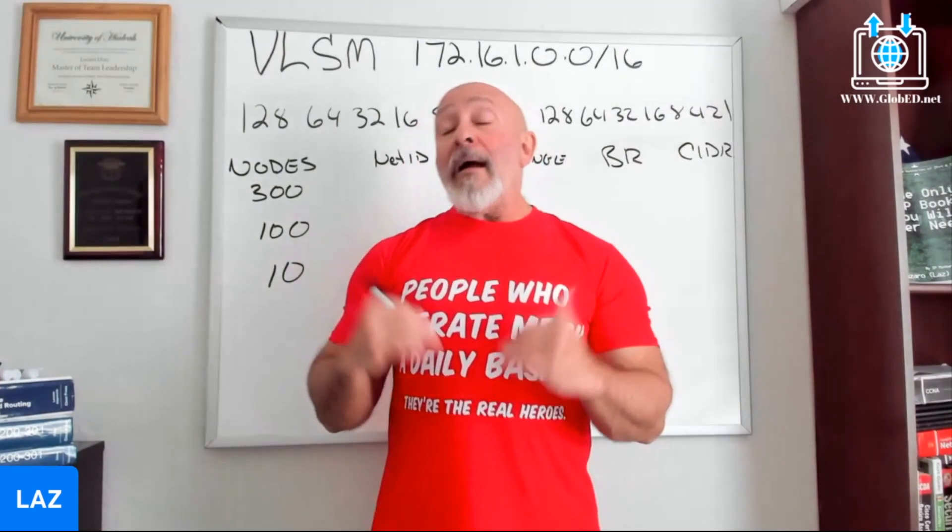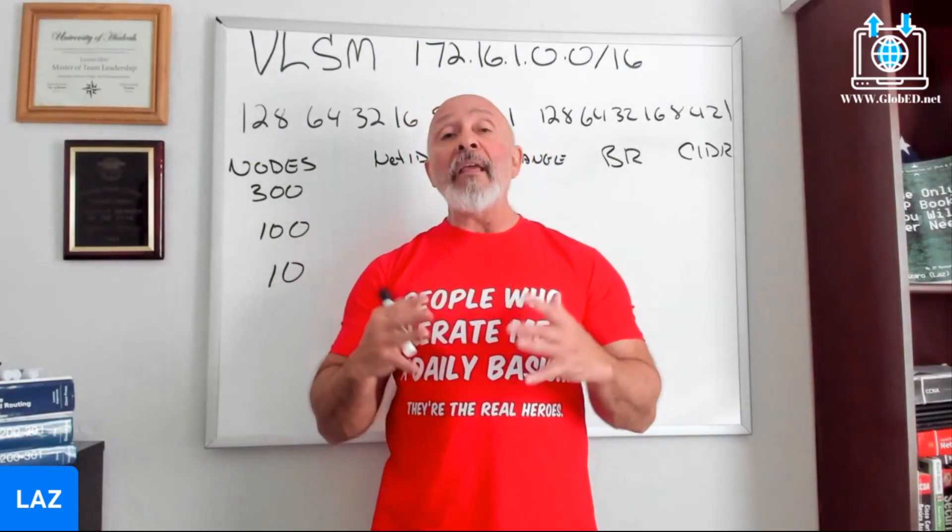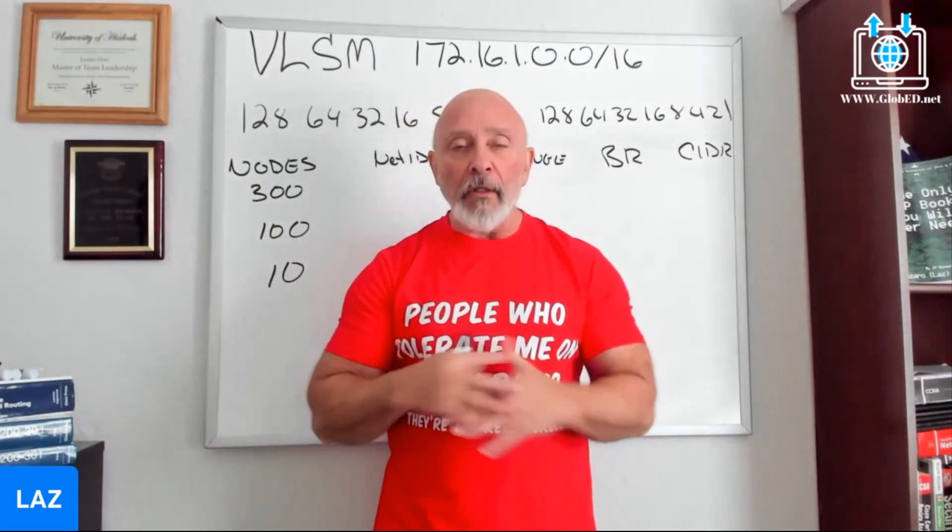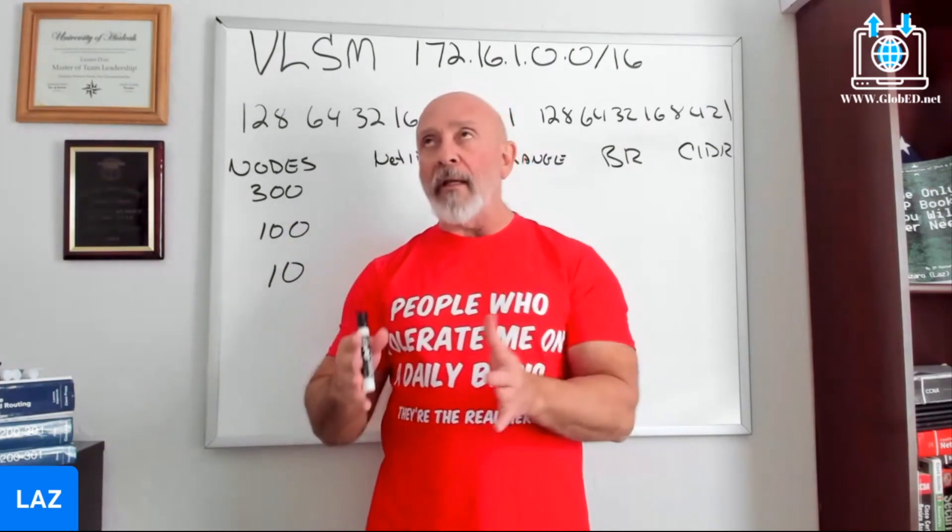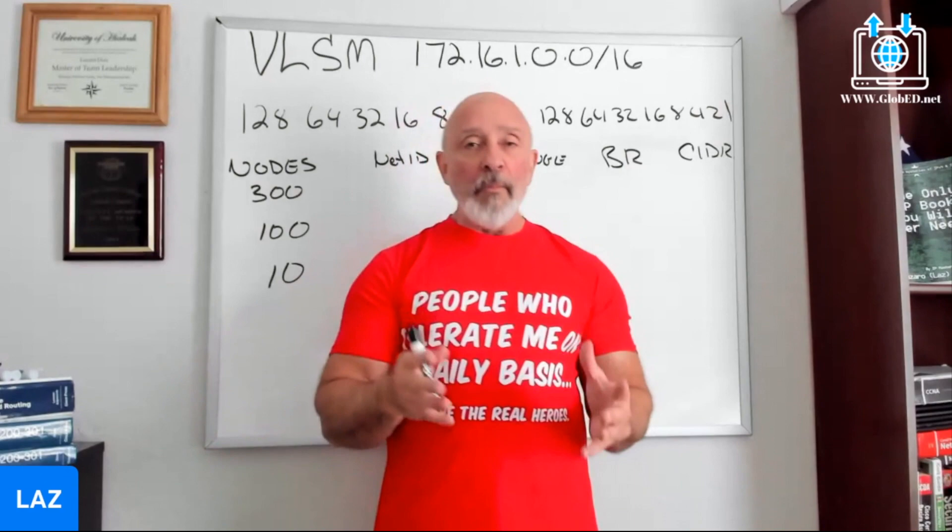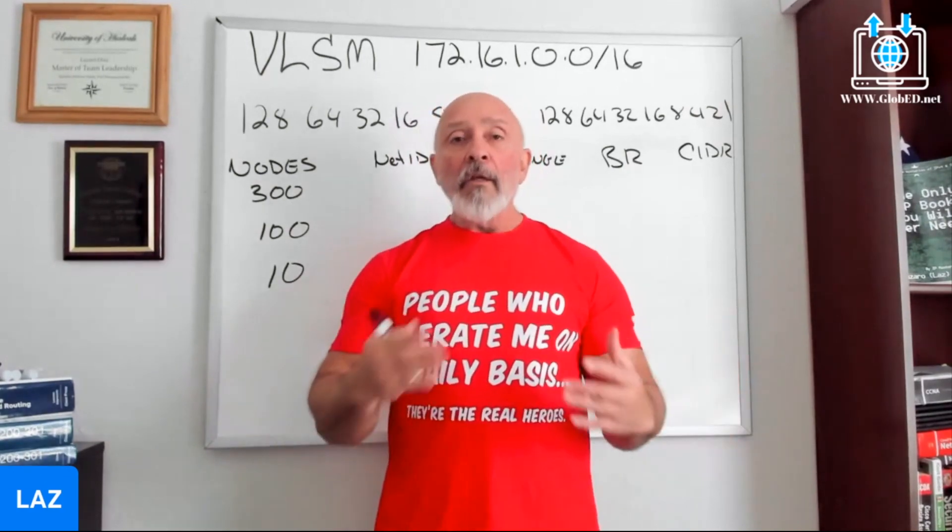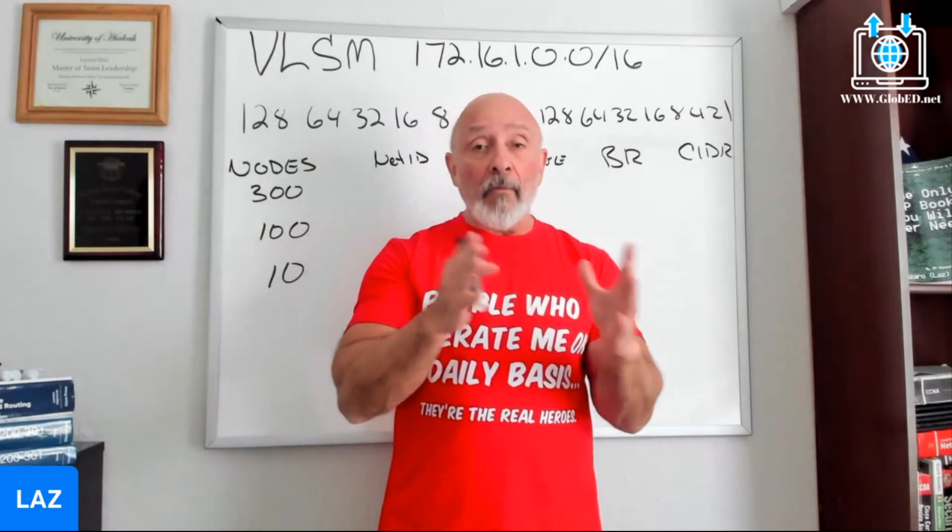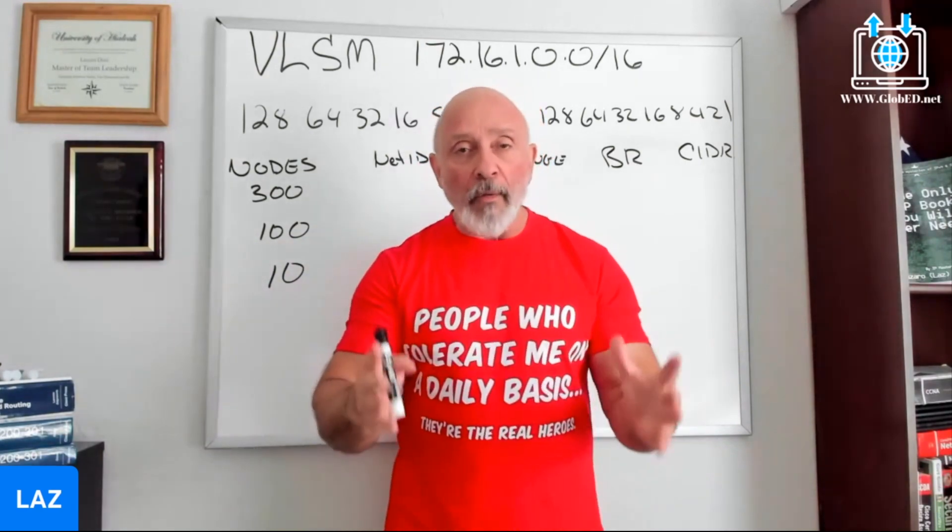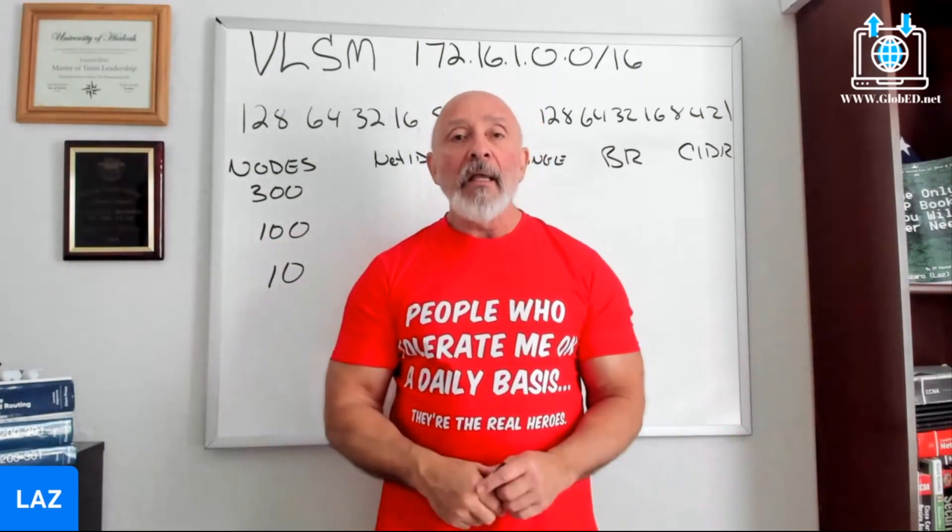Welcome back. Now we're going to do something called VLSM - Variable Length Subnet Masking. This has been around forever. It means that in a network you're going to use different subnet masks to meet the range as close as possible to the number of IP addresses that you're going to use.